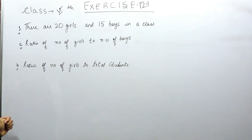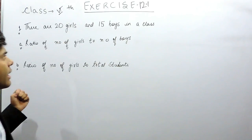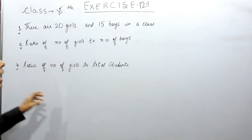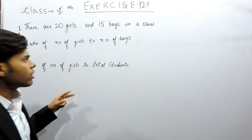So we have to find the ratio of number of girls to number of boys. Basically in ratio, ratio has no units, ratio is basically used to compare two things.